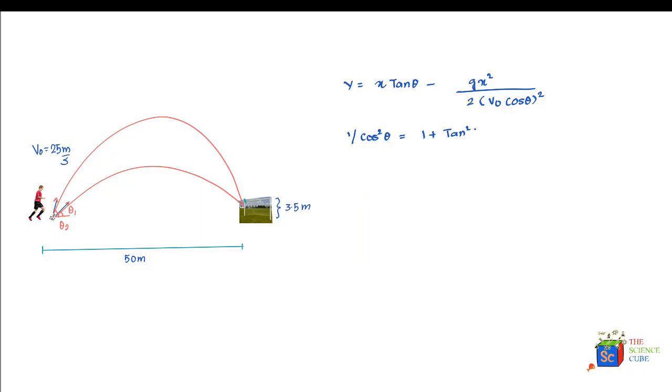We'll make use of this identity. If we substitute for cos theta in the above equation—let's call this equation 1—what you'll end up getting is a new equation.